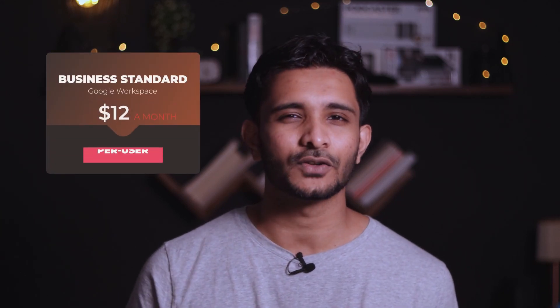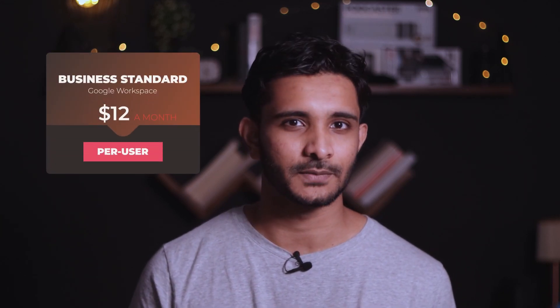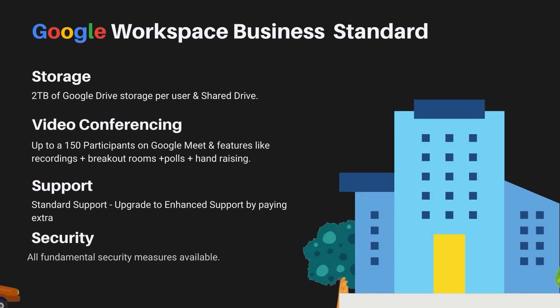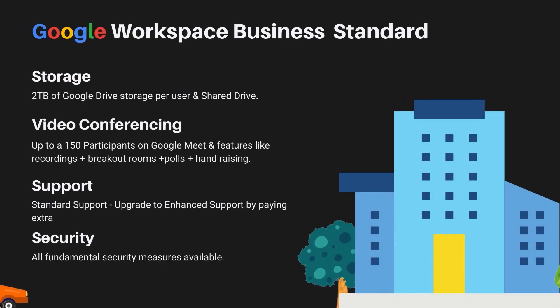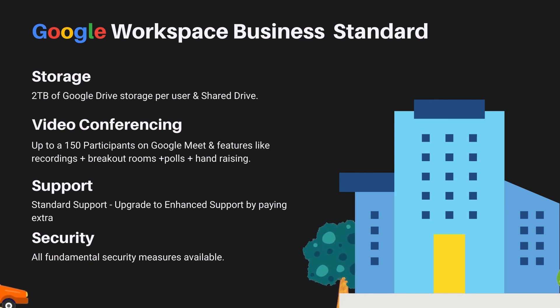Second, we have Business Standard at $12 a month per user. You get 2 terabytes of cloud storage — a massive upgrade from the starter plan — as well as shared drive storage. You can have up to 150 participants on Google Meet and also have the option to record your meetings, have breakout rooms, and polls. You only get standard support, but you can pay to upgrade to enhanced support if you need it.